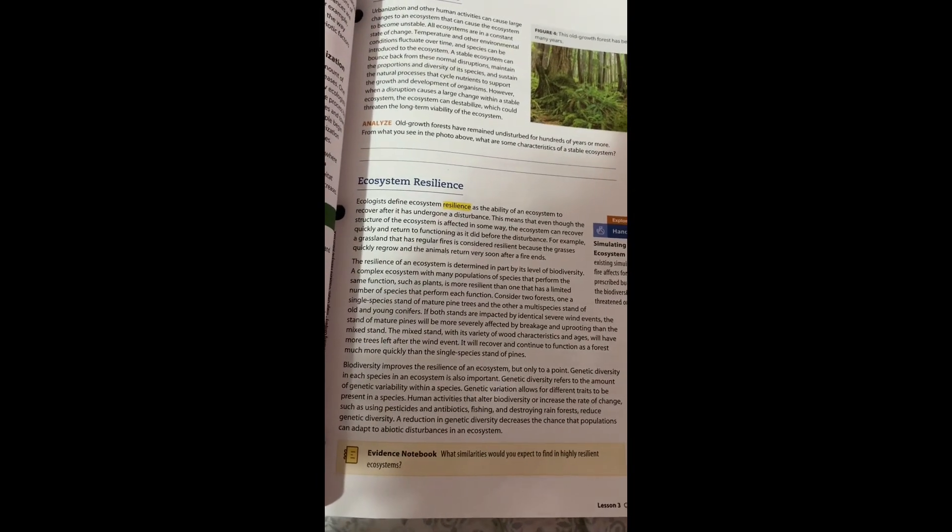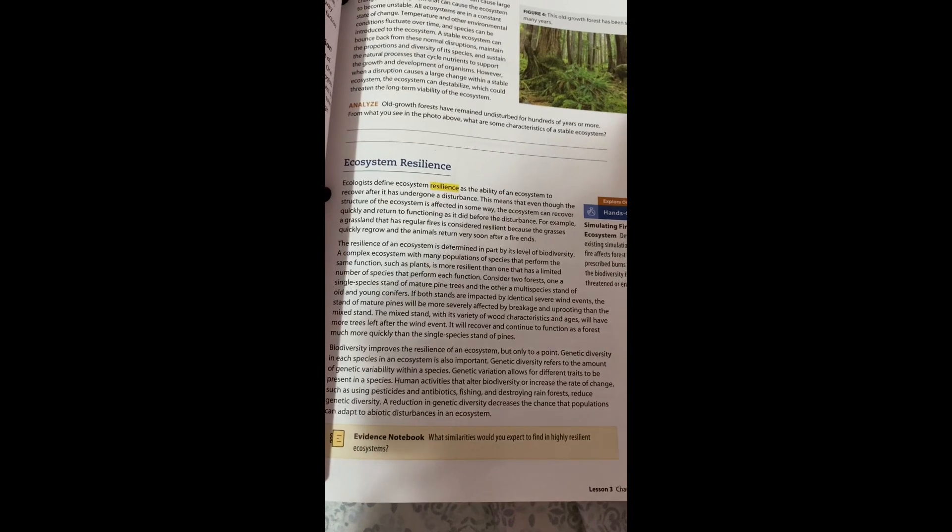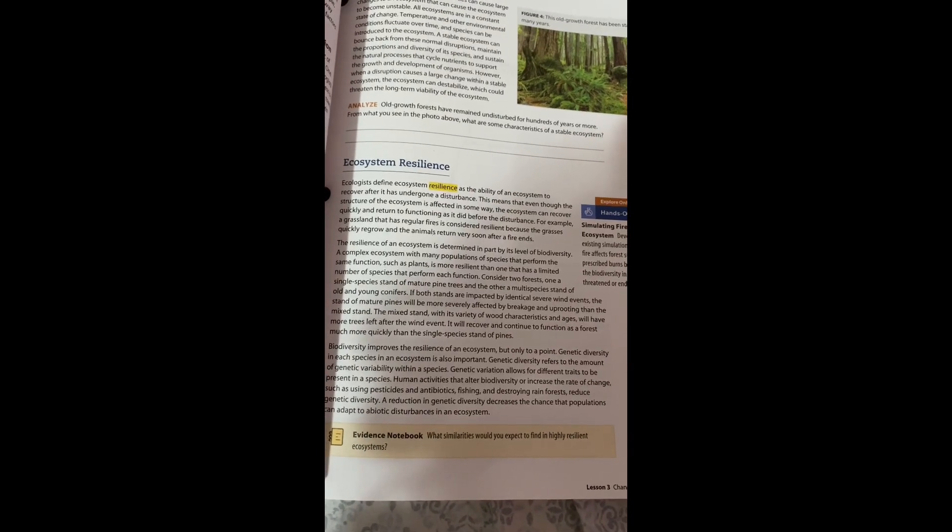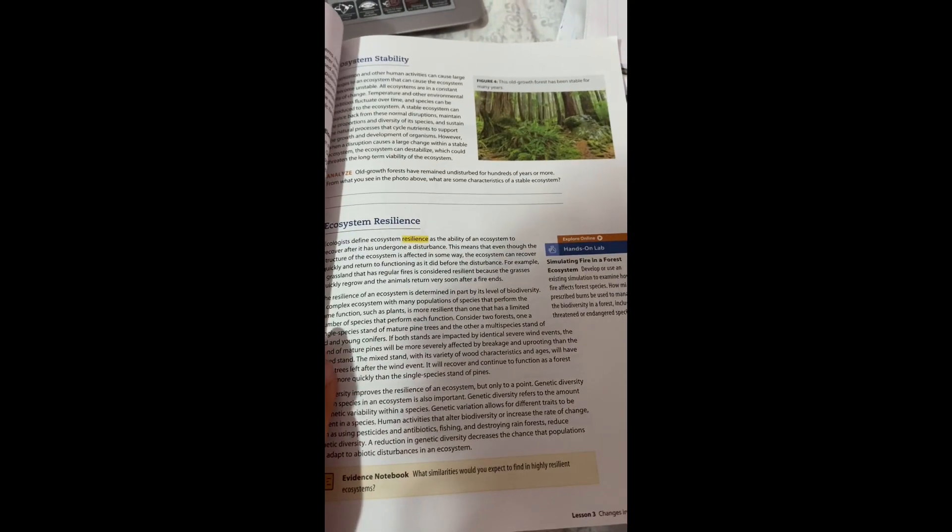Biodiversity improves the resilience of an ecosystem only to a point. Genetic variability is also important. Genetic variability of species provides different traits for adaptation. Human activities that alter biodiversity or increase the rate of change, such as pesticides, deforestation, and fishing, reduce genetic diversity and decrease the chance that populations can adapt to disturbances in an ecosystem.